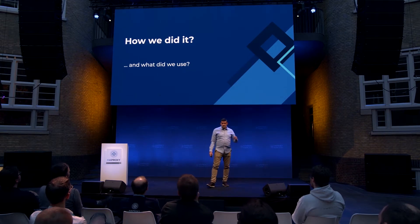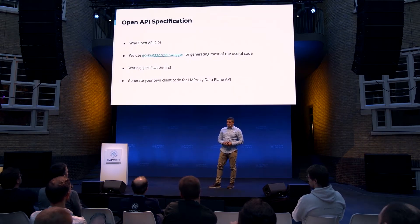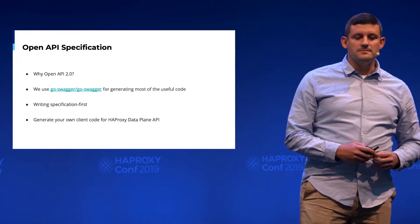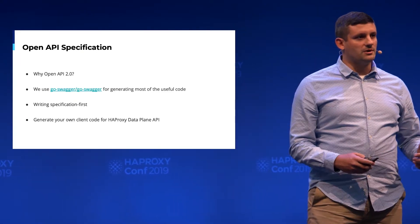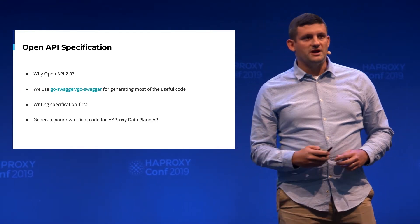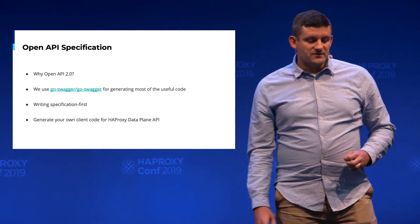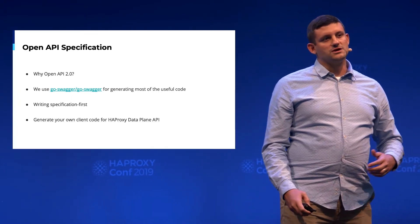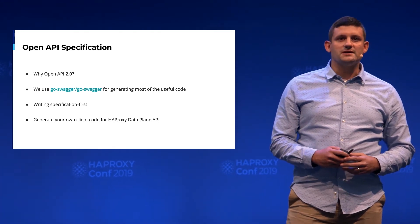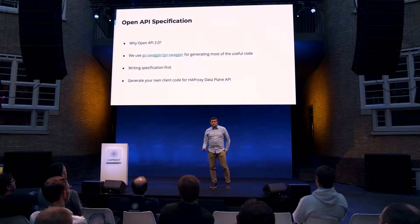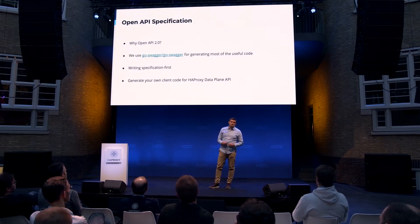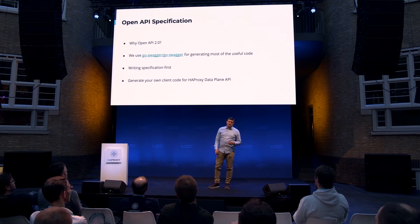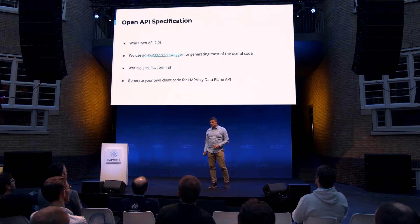The first project we built was the HAProxy Data Plane API. Being a REST API, we chose a language specification to describe it — specifically OpenAPI 2.0, formerly known as Swagger. At the time it was becoming a standard for defining REST APIs and had great tooling support. One of the tools we used is the go-swagger tool, which generates most of our useful code: structs from OpenAPI YAML definitions, validation functions, server skeleton functions, and much more.